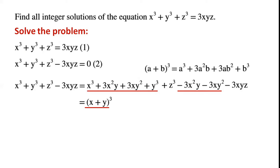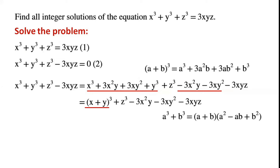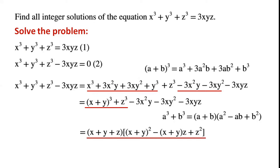According to the formula, the first four terms can be written as (x plus y) all cubed. And we also write plus z cubed minus 3x squared y minus 3xy squared minus 3xyz. We know that a cubed plus b cubed can be written as (a plus b) times (a squared minus ab plus b squared). So (x plus y) all cubed plus z cubed can be written as (x plus y plus z) times (x plus y) all squared minus (x plus y) times z plus z squared.